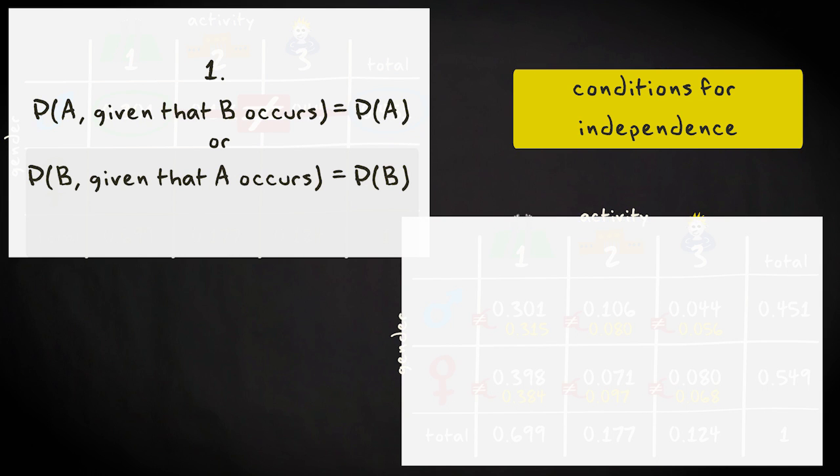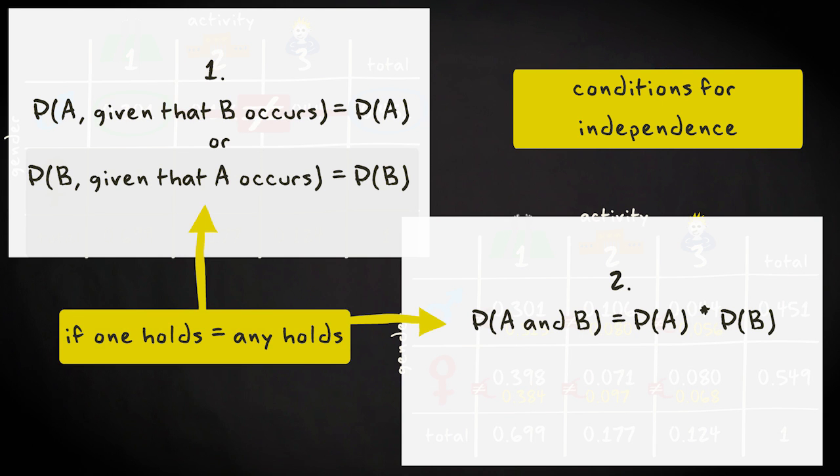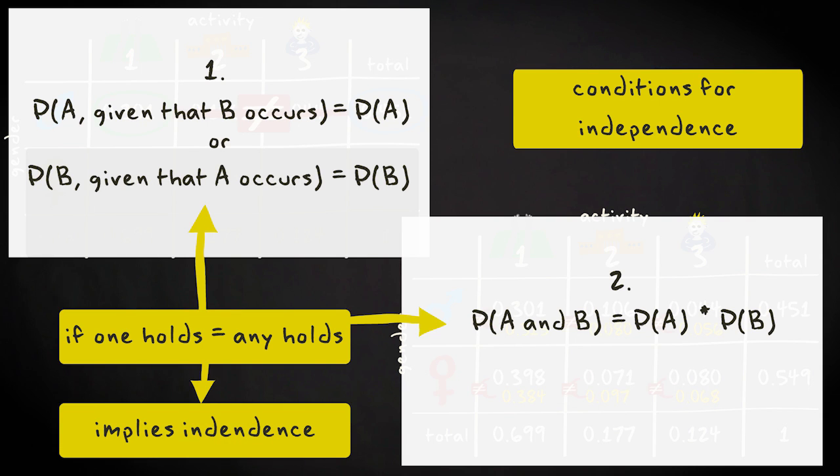The second definition is, events are independent if the joint probability equals the product of the separate marginal probabilities. If any of the two conditions holds, then events A and B can be considered as independent.